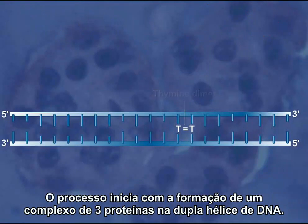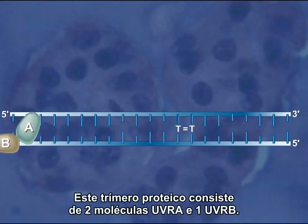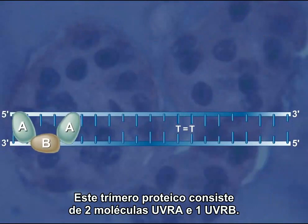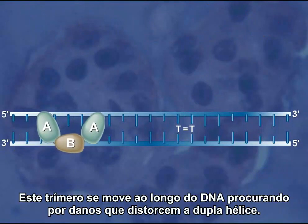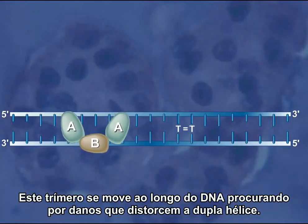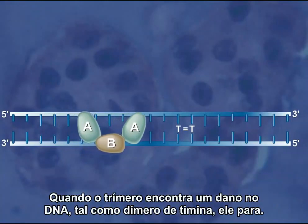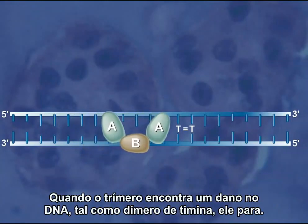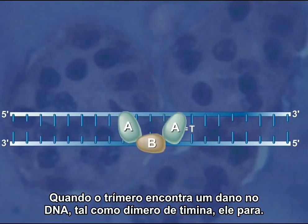The process begins with the loading of a protein trimer onto the DNA double helix. This trimer consists of two UVR-A molecules and one UVR-B molecule. The trimer moves along the DNA, scanning for damage that distorts the double helix. When the trimer encounters DNA damage such as a thymine dimer, it stops.